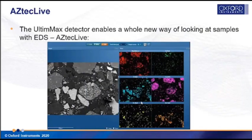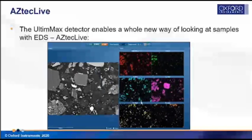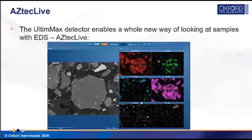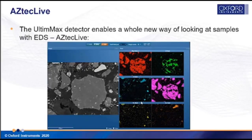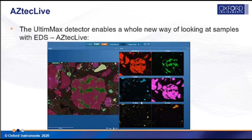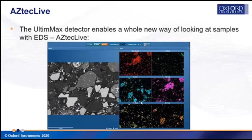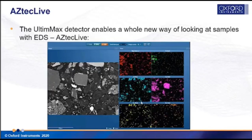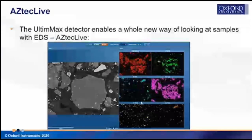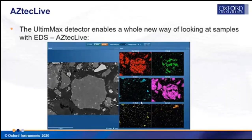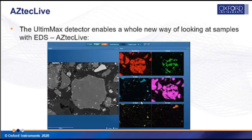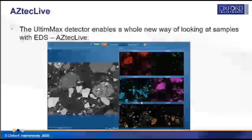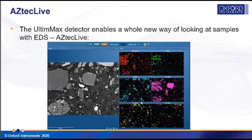The first of these new possibilities is Aztec Live — a whole new approach to looking at samples with EDS. As shown in this animated screen grab, the operator is moving around the sample with the electron image on the left and live X-ray maps on the right. As soon as the operator stops at a particular point, the system starts integrating the maps to improve quality. It makes hunting for specific elements or specific minerals in your sample much easier.